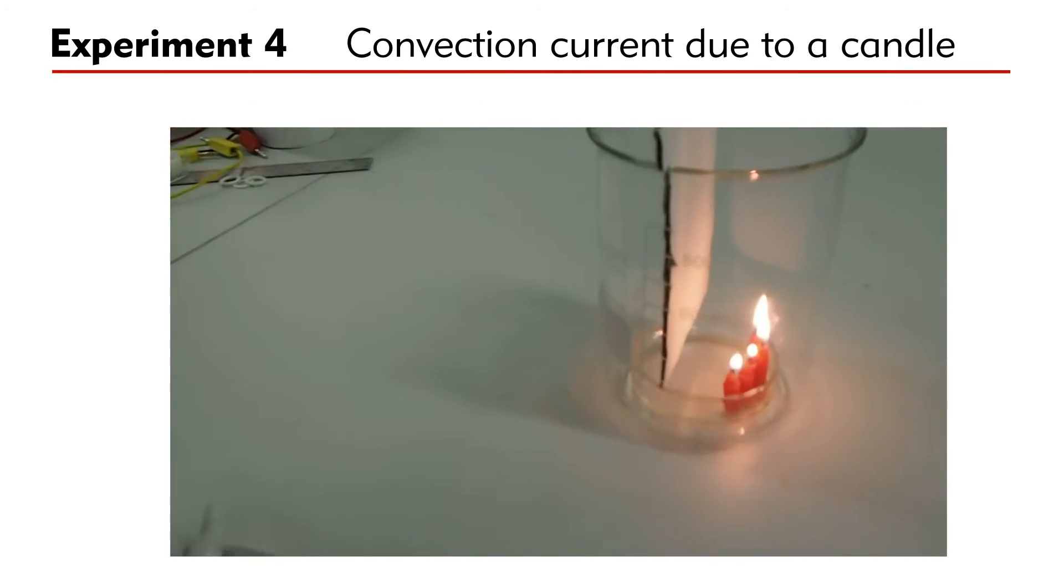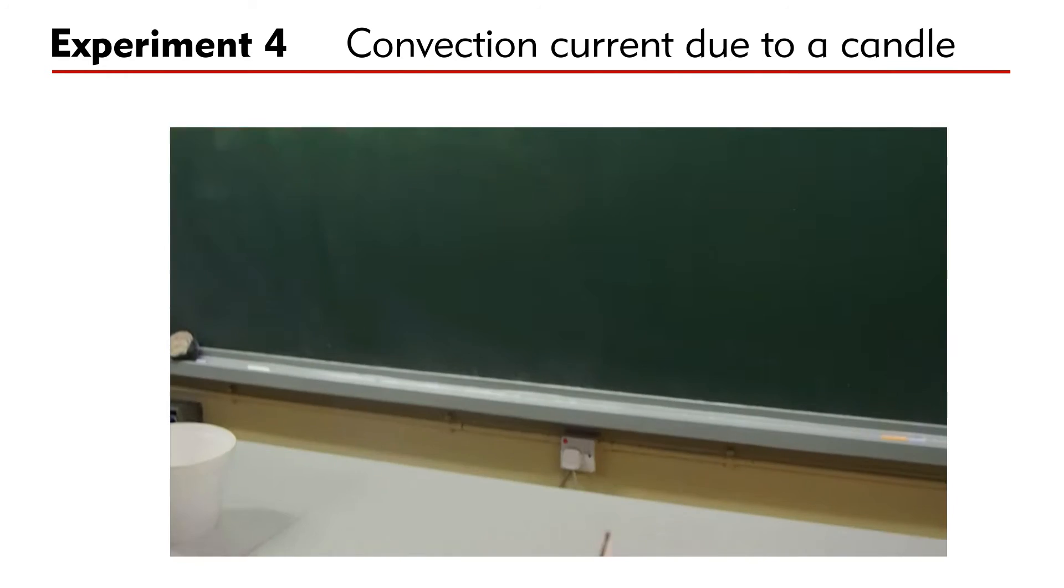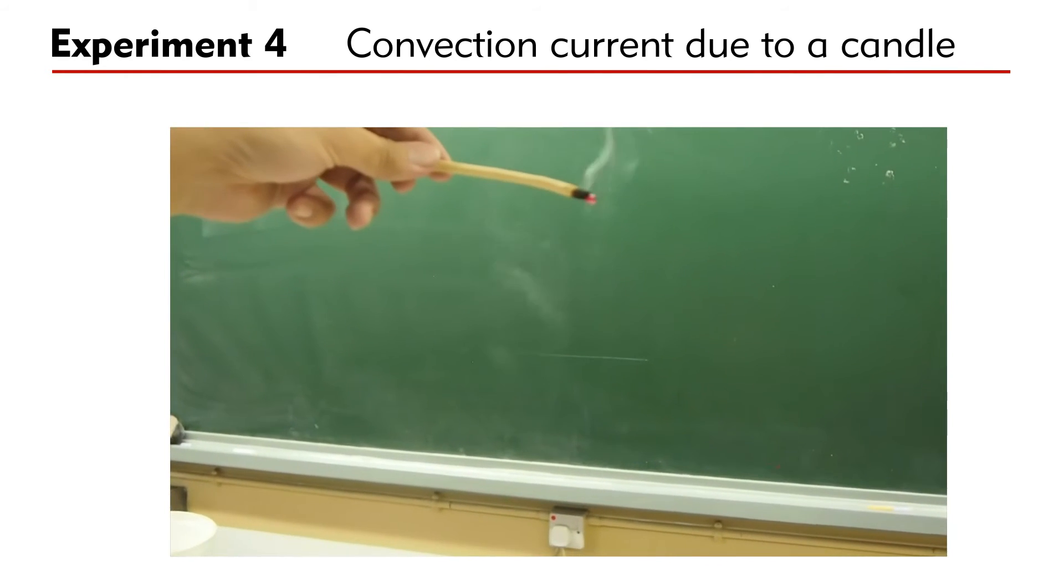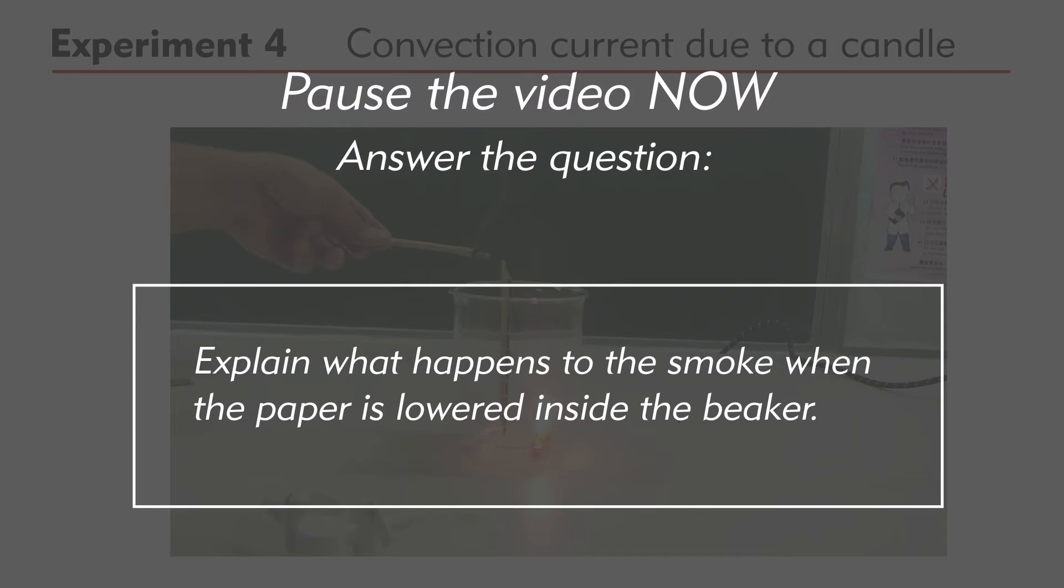One more experiment on burning candle. A beaker is separated into two chambers by a T-shaped paper card with candles burning in one chamber. Smoking paper is burned to produce smoke. The smoke rises due to the hot air heated by the burning paper. Explain what happened to the smoke when it is loaded inside the beaker. Pause the video for a while and answer the question.